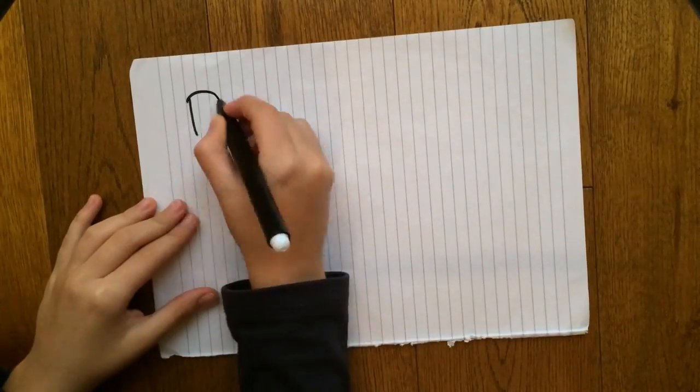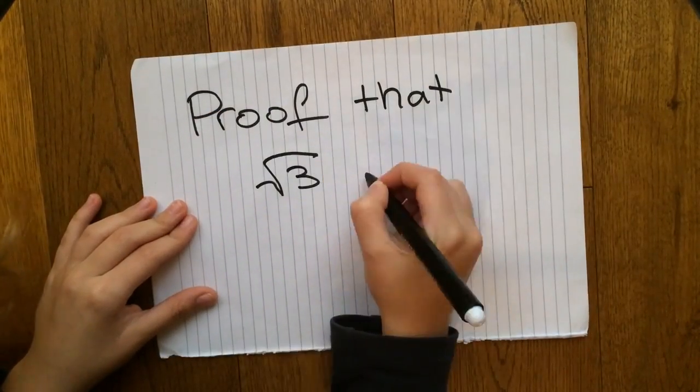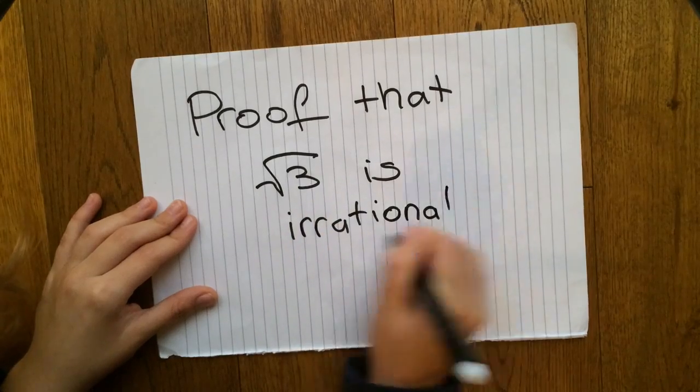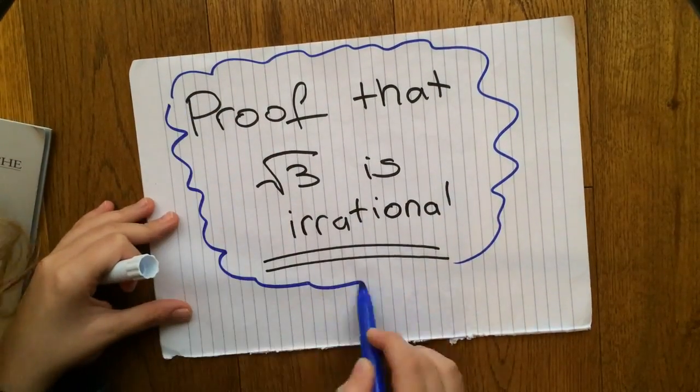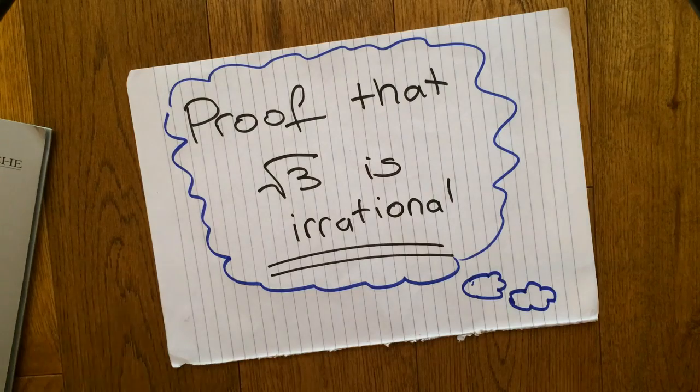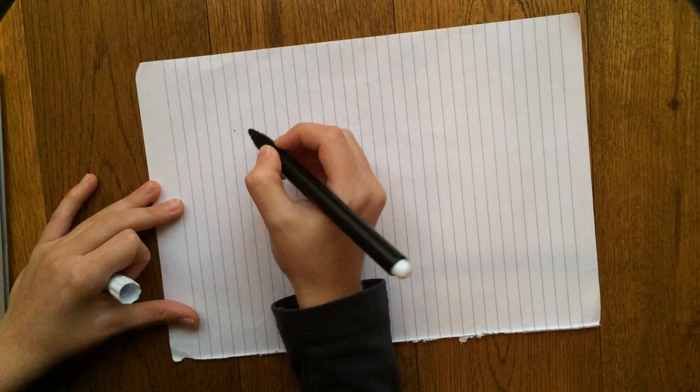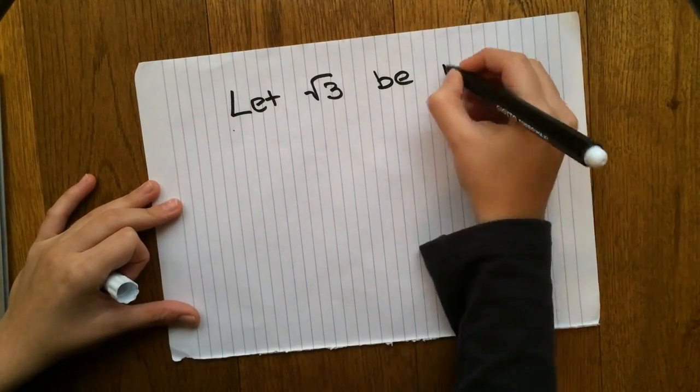Proof that square root of 3 is irrational. In order to do that, we're going to use an old method called the proof by contradiction. In this method, we first assume that something is what everybody else thinks it is. So in this case, let square root of 3 be rational.